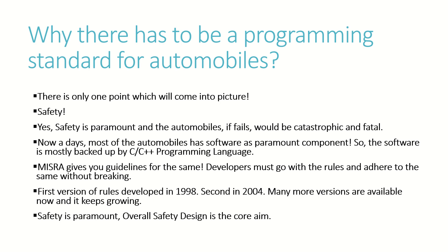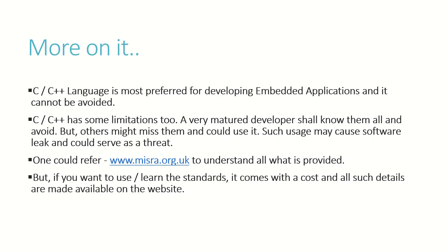MISRA gives you guidelines for the kind of programming that goes into automobiles, and developers are expected to adhere to these rules without breaking them. The first version of MISRA guidelines came in 1998, the second in 2004, and many revisions have followed, each adding more rules. In one word, safety is paramount — overall safe design is the core aim. C and C++ are the most preferred languages for automobile programming because they are proven and have found success in embedded development.